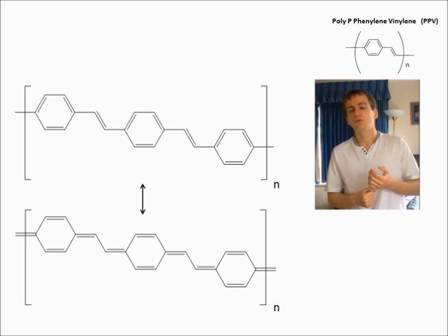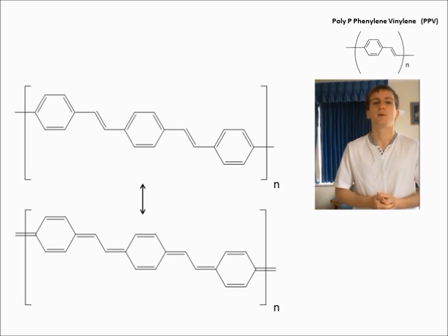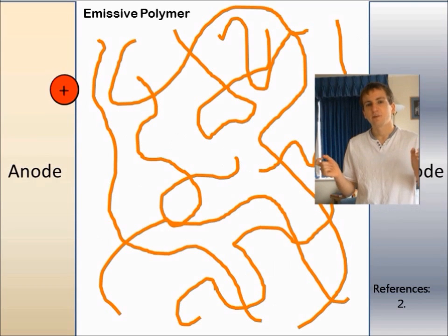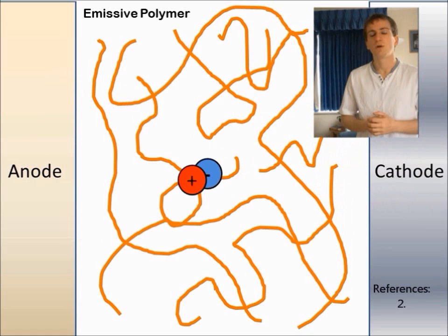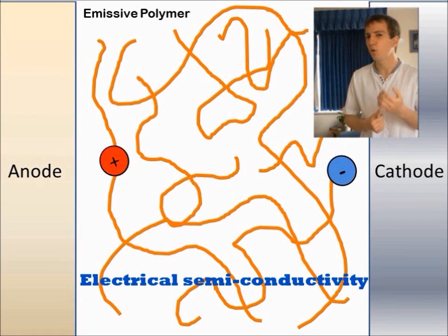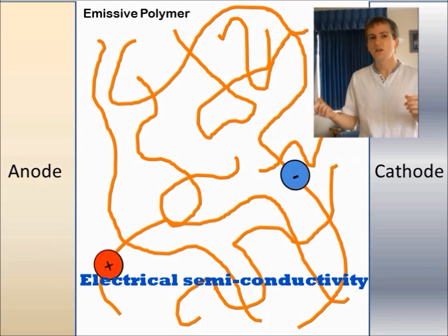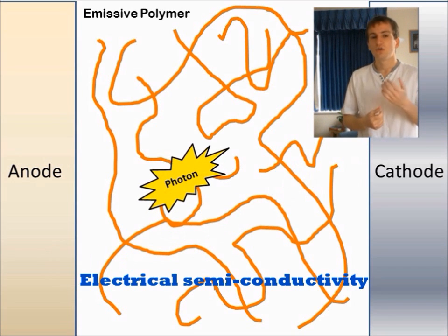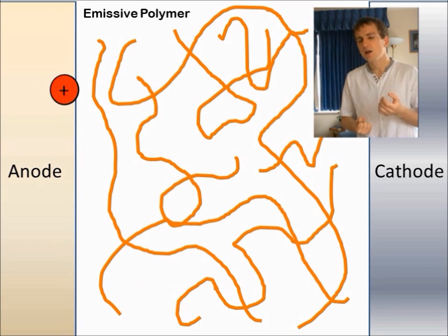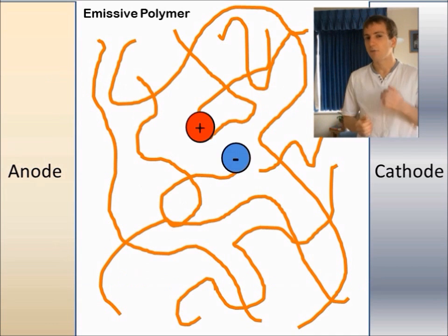The conjugation gives rise to some of the properties we need from the polymer. Because of the delocalization, any injected charges are pretty mobile across PPV polymer molecules. And this is important for a P-OLED because any injected electrons and holes need to be able to find each other due to the high mobility. They're quite likely to find each other, cancel out and release photons.